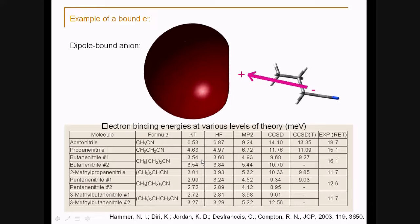By the way, in this table, what I call electron binding energy, or electron affinity, is actually vertical attachment energy, because all the calculations were done at the geometry of the neutral.